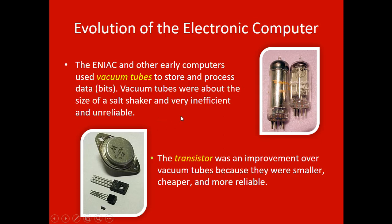The way they stored those values in the processor of the ENIAC was with these vacuum tubes — these were fragile, these things would break, and they were not ideal. As later electronic computers came out, these vacuum tubes were replaced with something called a transistor. As you look at pictures of transistors, you'll see that they got smaller and smaller and smaller. This is really important because the miniaturization of these components is one of the major factors in how well and how quickly computers have evolved.